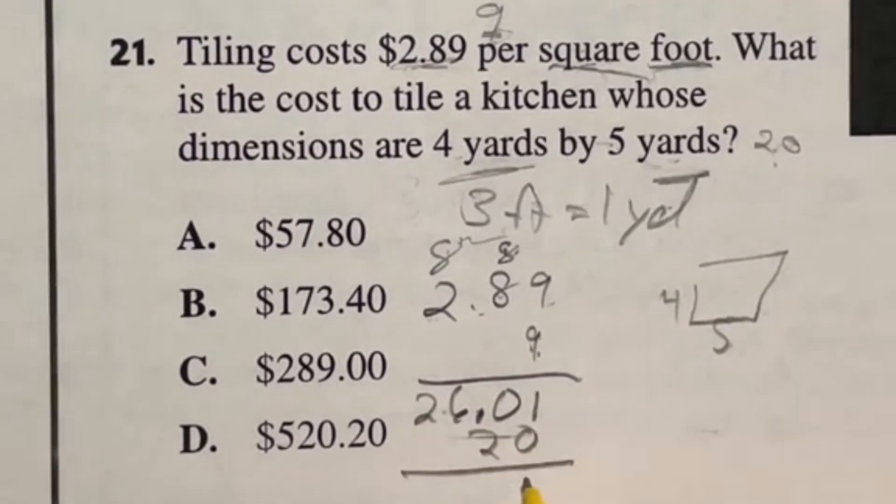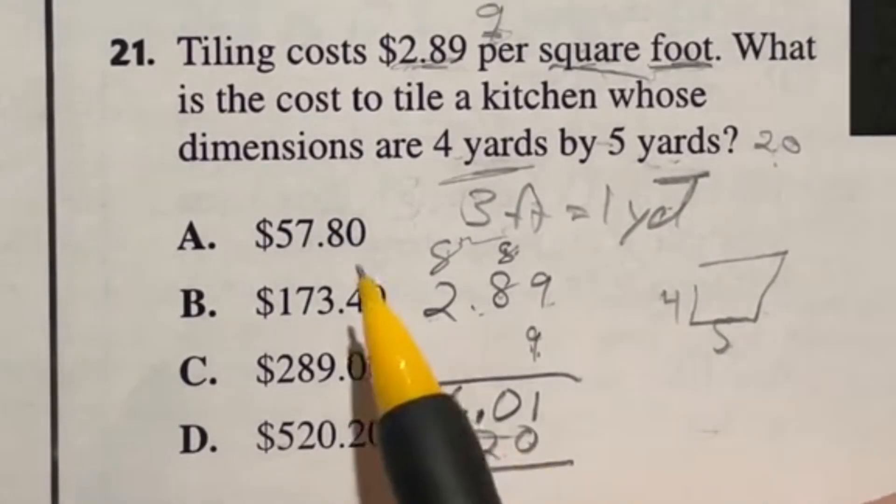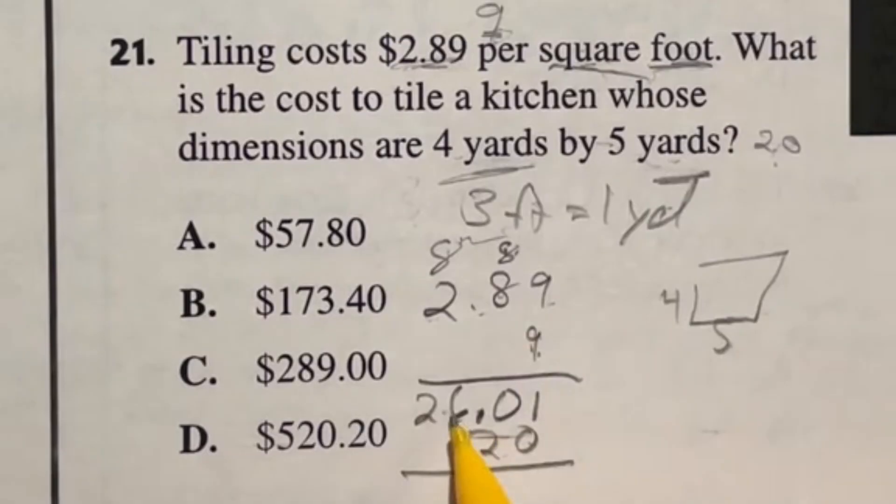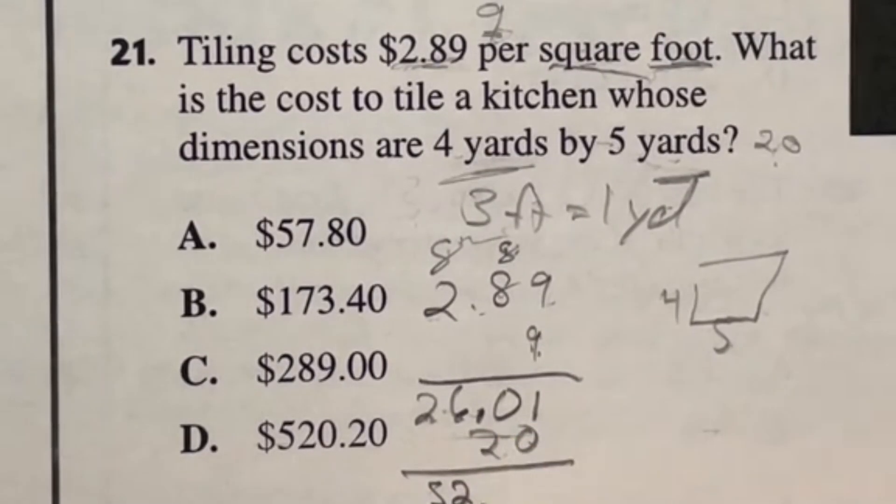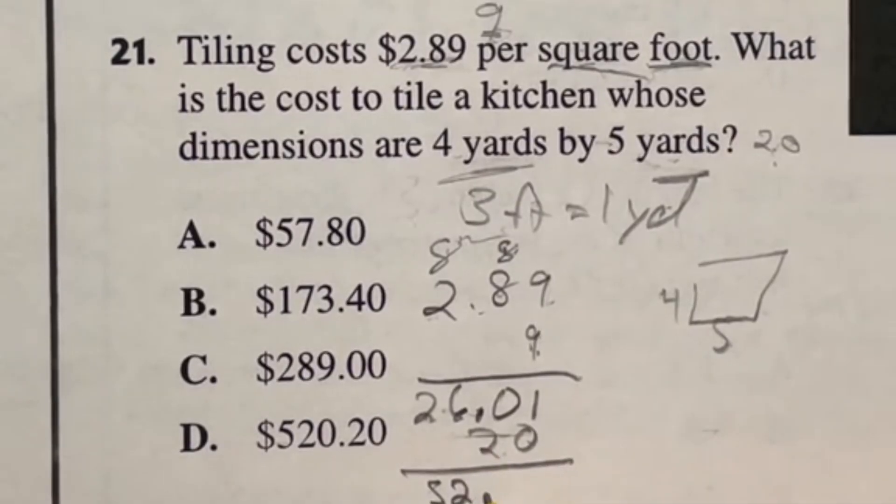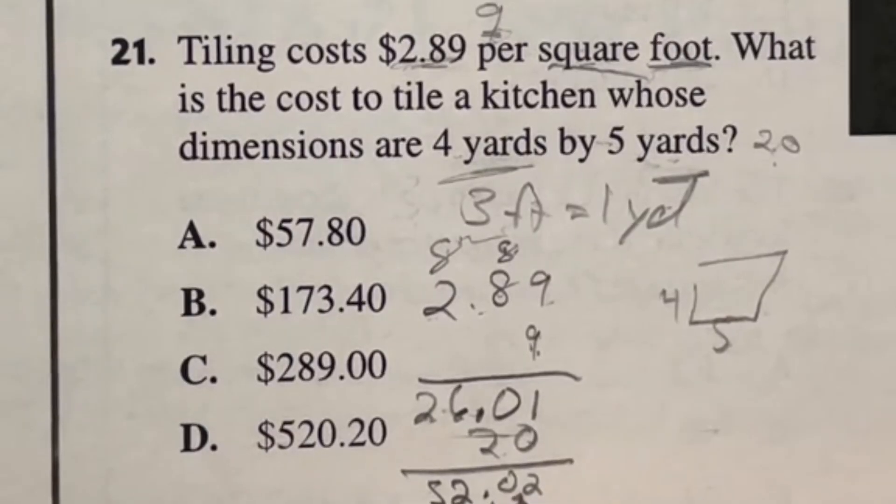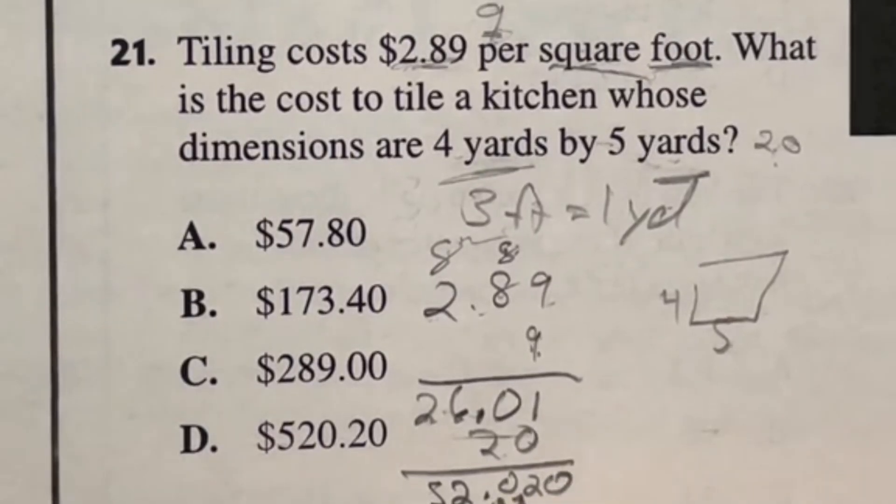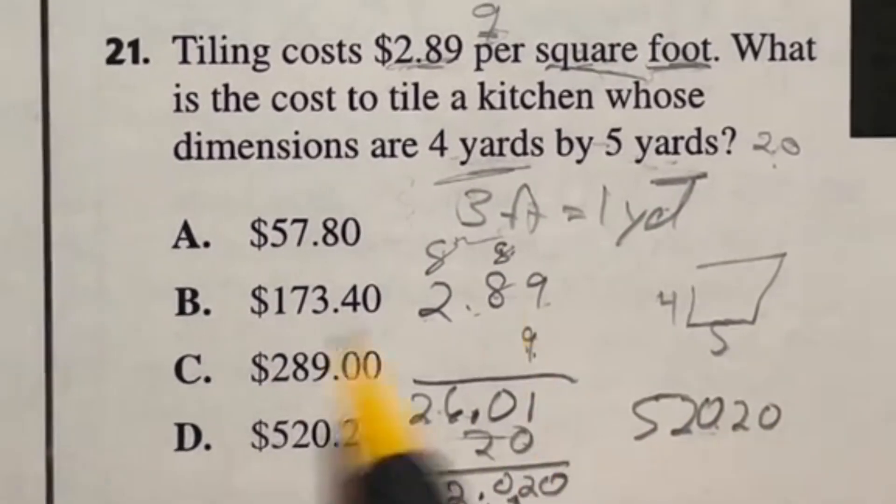Now we need to multiply that by the dimensions. Four by five kitchen, four times five is 20. So we have to multiply this by 20. That's actually easy because we're just essentially doubling it and putting a zero on the end. So we actually want to end up with $520.20, which is answer D.